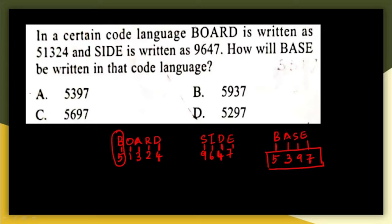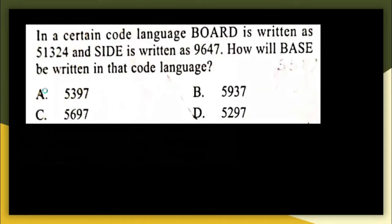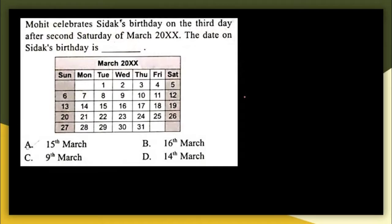The code for BASE is 5 3 9 7, which is option A. If you are not familiar with coding-decoding, please refer to our video lesson on that topic. The correct answer is option A.